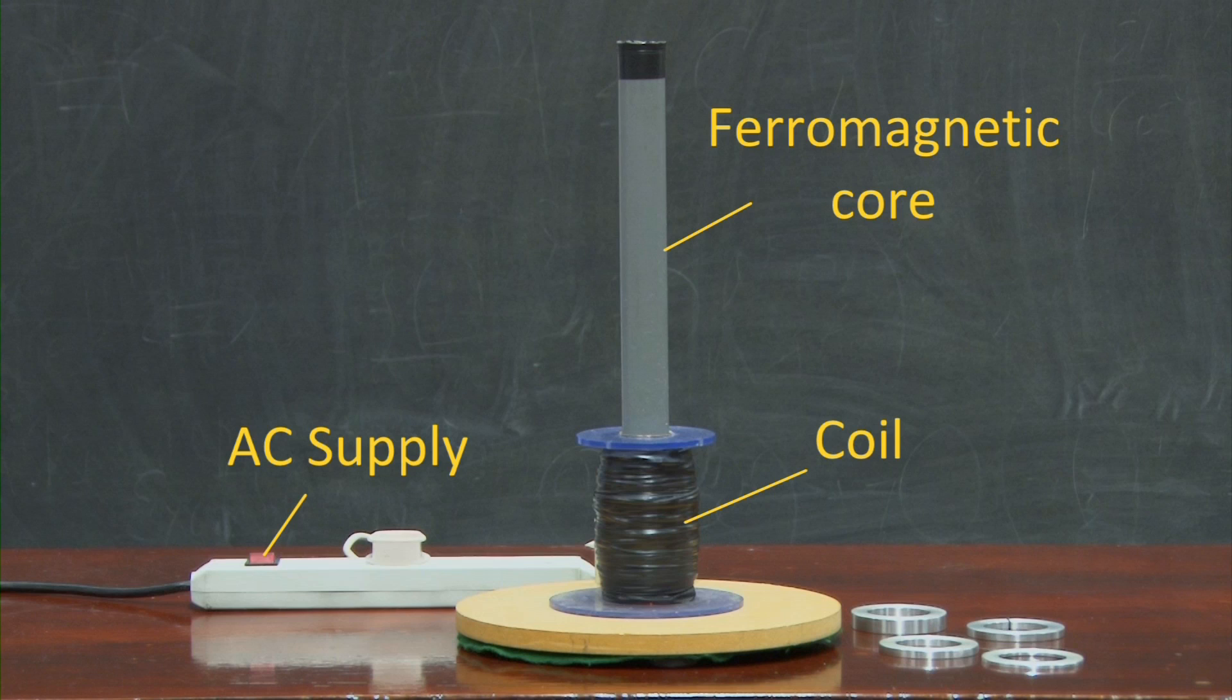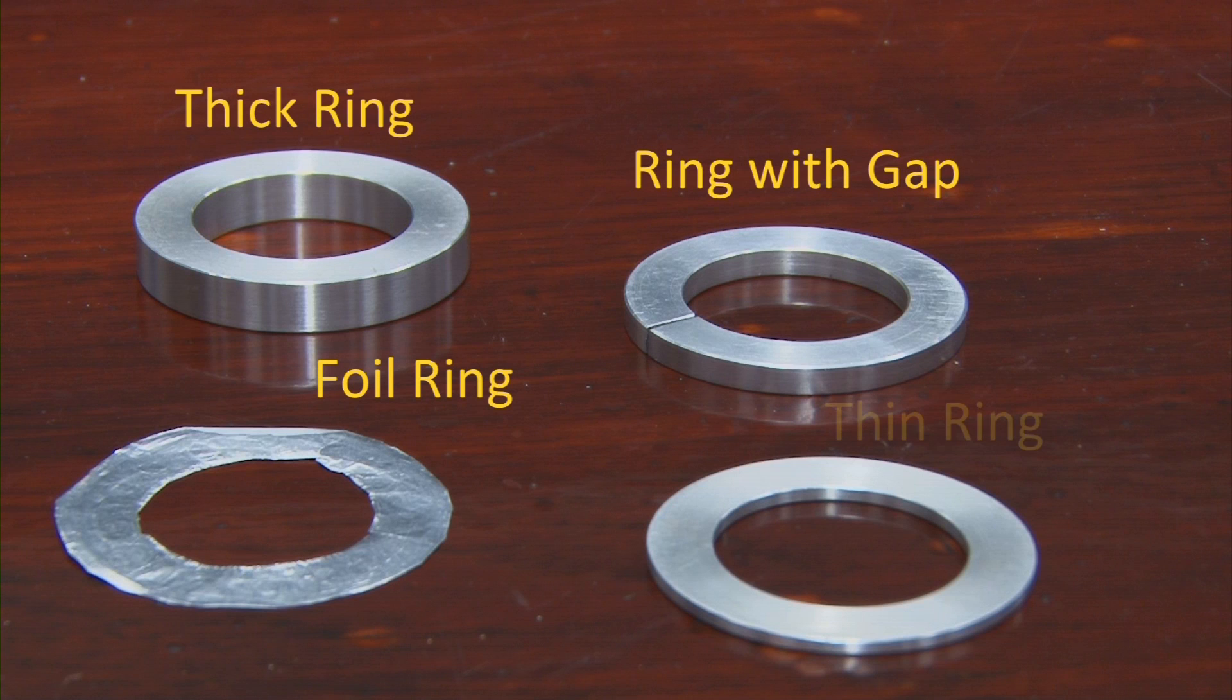The coil is connected via a switch to a 240 volt, 50 hertz, AC supply. There are several aluminium rings of different thicknesses.